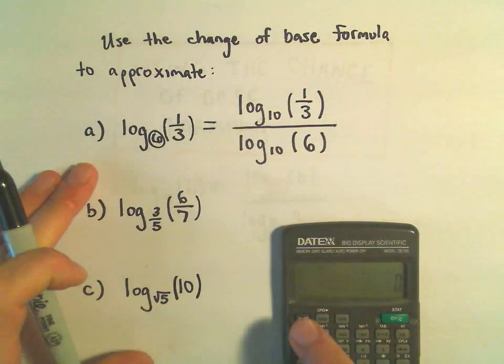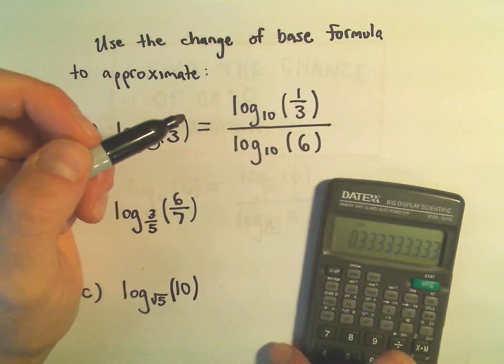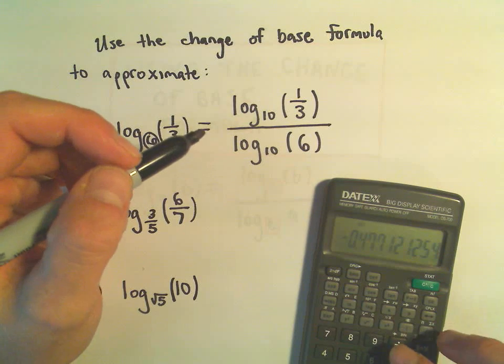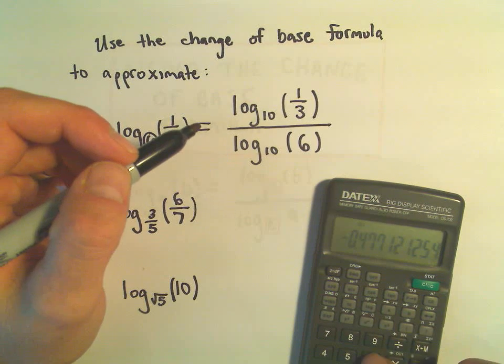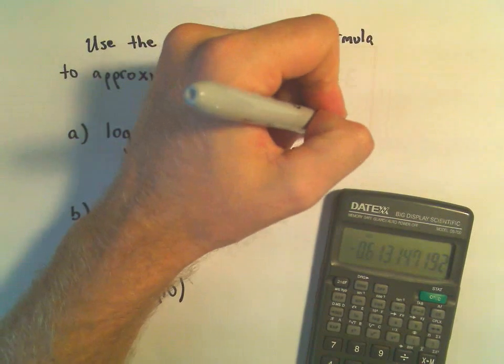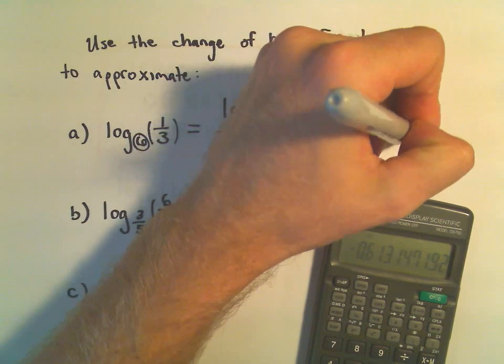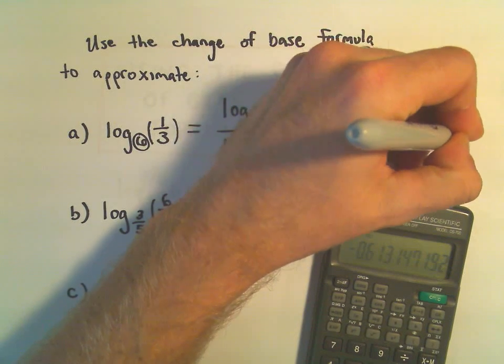Now I can simply evaluate this. I'm going to do 1 divided by 3. This is the order I have to do it on my calculator. Then I'm going to hit log of that. Then I'm going to divide that by my log base 10 of 6. And I'm getting this to be equal to negative 0.613147192.